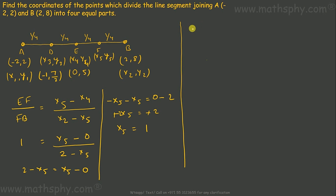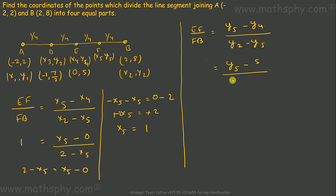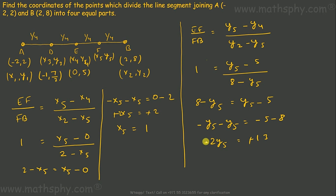Let's find Y5. EF over FB equals (Y5 minus Y4) over (Y2 minus Y5). With Y4 equals 5 and Y2 equals 8: 8 minus Y5 equals Y5 minus 5, so minus 2Y5 equals minus 13, giving Y5 equals 13 over 2. So point F is at coordinates (1, 13/2).